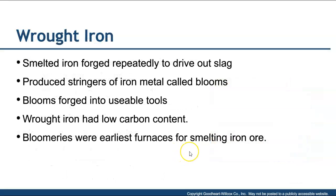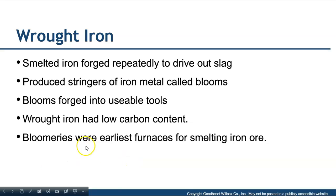Wrought iron was the first development. It was forged repeatedly to drive out the slag, producing stringers of iron called blooms. Those blooms were then forged into different tools. The key thing to remember about wrought iron is that it has a very low carbon content. What were referred to as bloomeries were among the earliest furnaces for smelting iron ore.